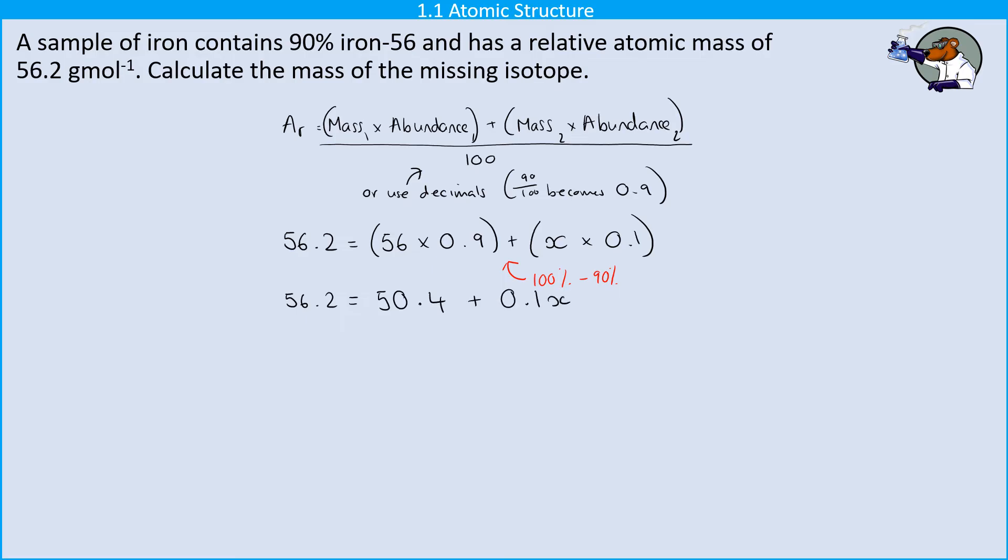Now I can expand my brackets and I know that 56 times 0.9 is 50.4 and x times by 0.1 is 0.1x so then I can subtract 50.4 from both sides of the equation and I get 5.8 is 0.1x.